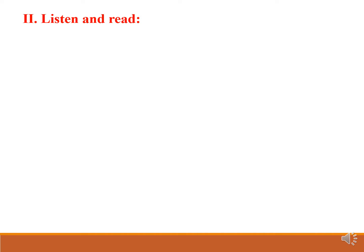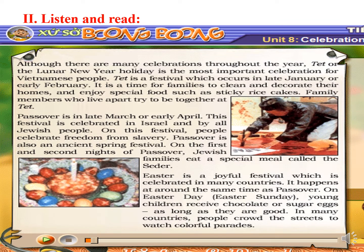Let's come to listen and read. Look at the text and listen. Although there are many celebrations throughout the year, Tet or the Lunar New Year holiday is the most important celebration for Vietnamese people. Tet is a festival which occurs in late January or early February. It is a time for families to clean and decorate their homes and enjoy special food such as sticky rice cakes.